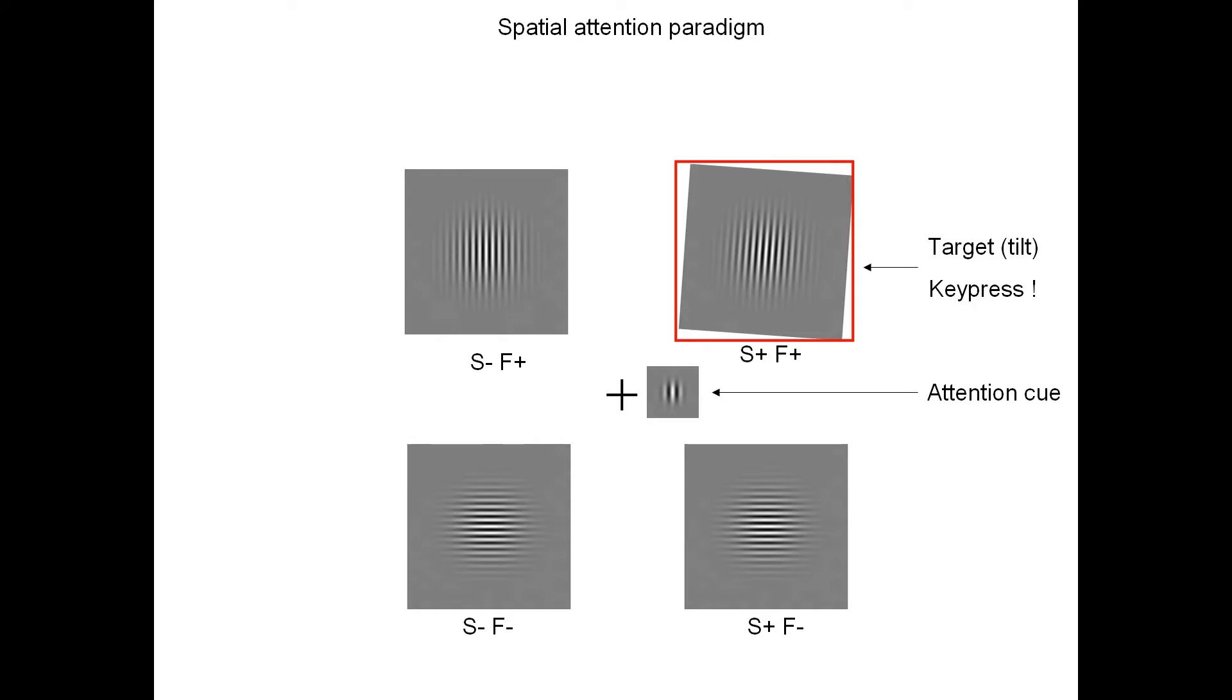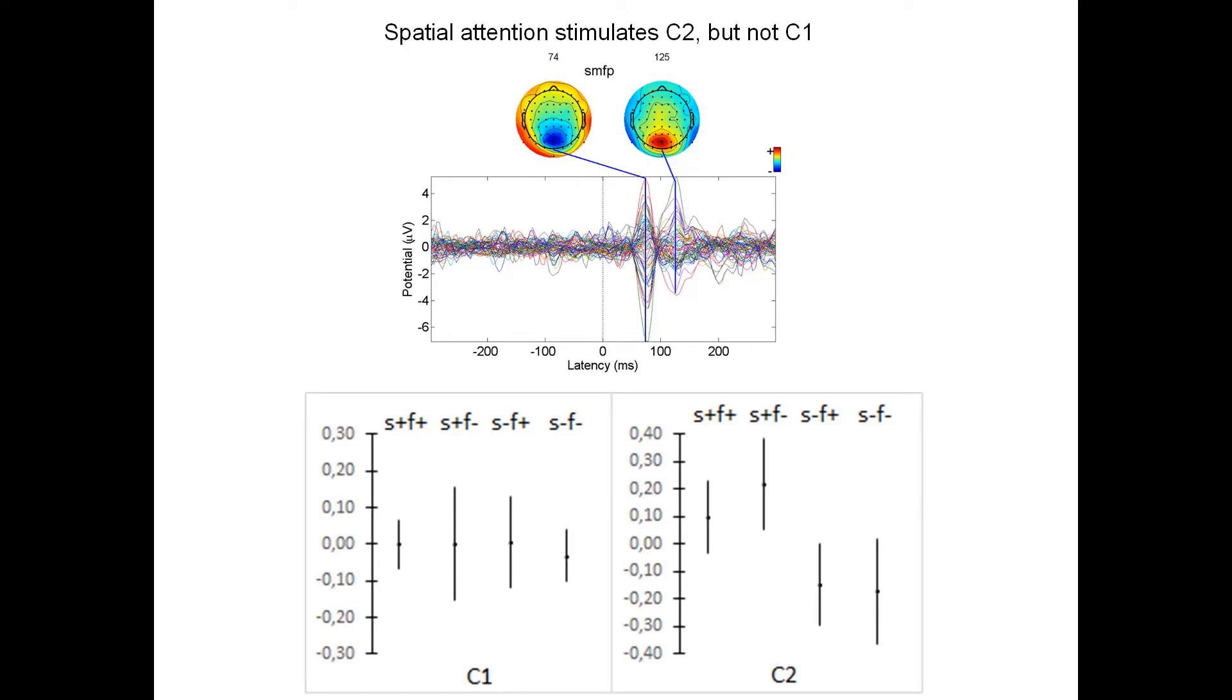Spatial attention, something that is well known for the components like P1, N1, etc., selectively stimulates the C2 component. There is debate in the literature if attention can do something with C1, but at least at the level of the spatial attention, we were not able to demonstrate anything like this.